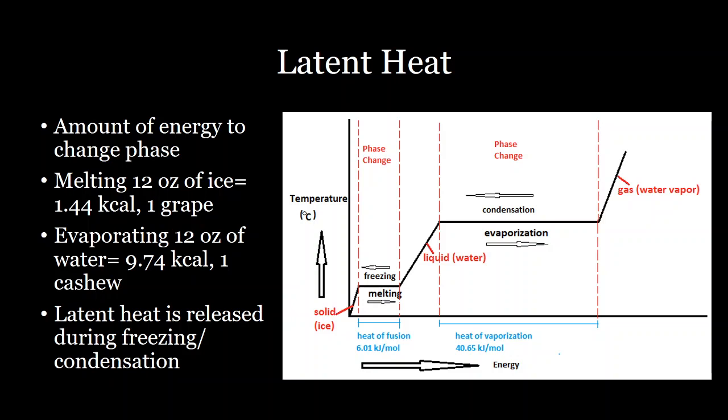So next, we're going to be talking about latent heat. So latent heat, as you remember from when we were talking about where that energy from the sun goes, is the energy that goes to changing the phase of a substance. So for example, ice changing into water or water turning into water vapor. And so there's a lot of energy that's needed to do these phase changes.